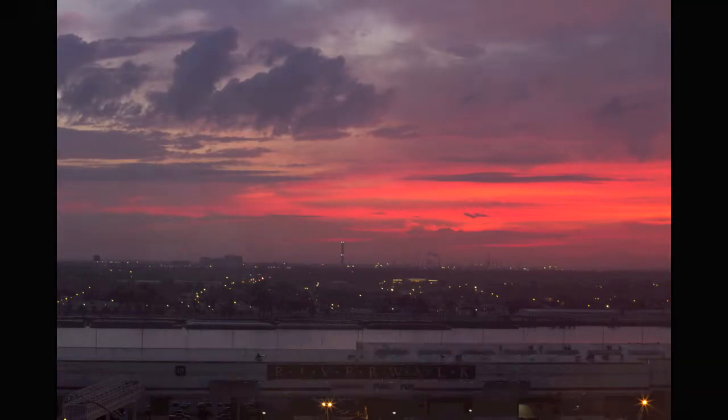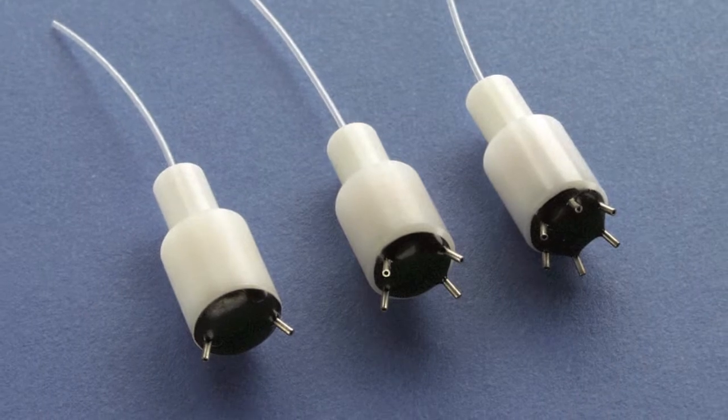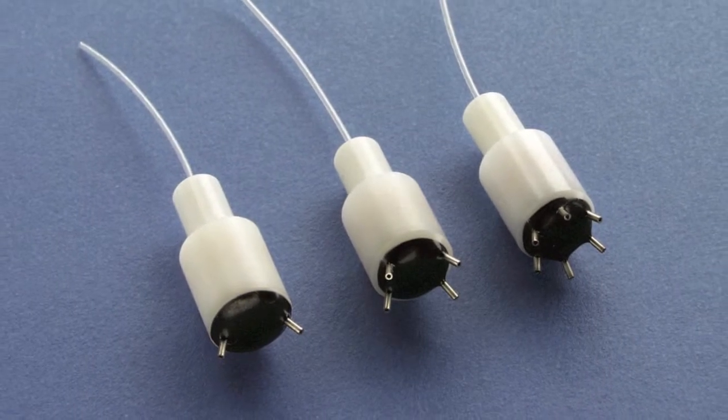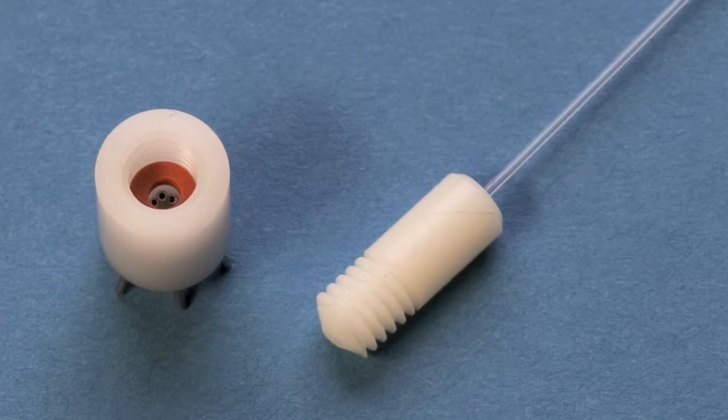Today, we're going to demonstrate how to replace the PE10 tubing used on the output side of the Warner Instruments MM series manifolds.